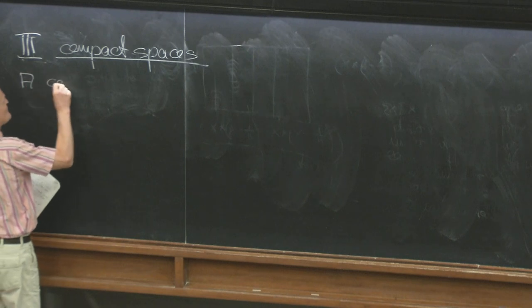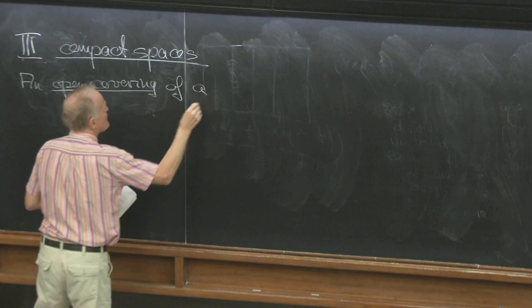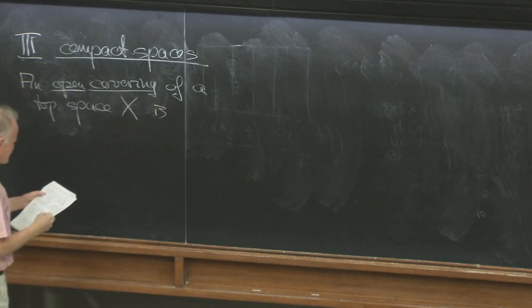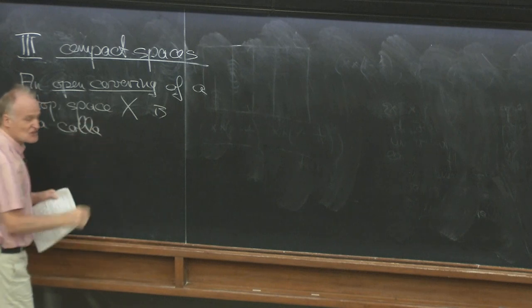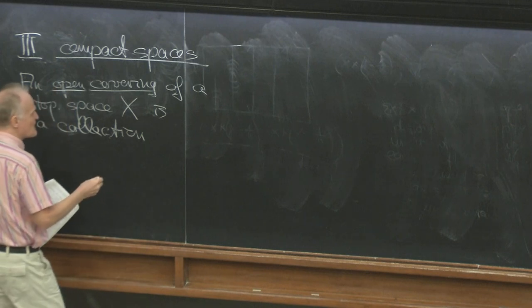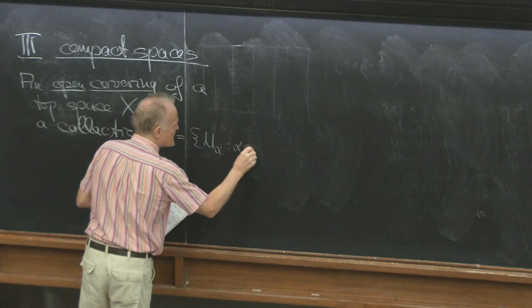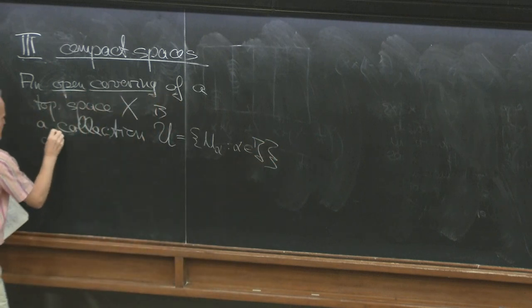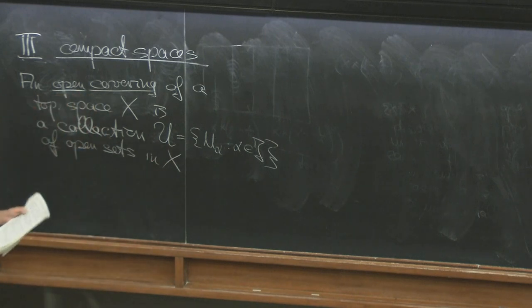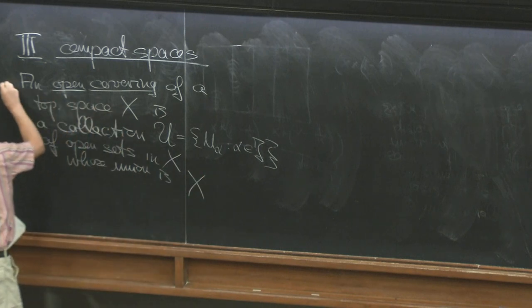So basic definitions. An open covering of a topological space X is a collection — let's say a family {U_alpha}, alpha in some index set — of open sets in X whose union is X.